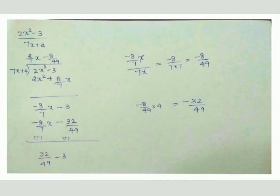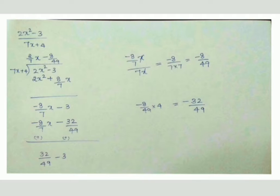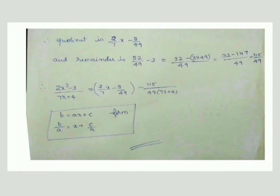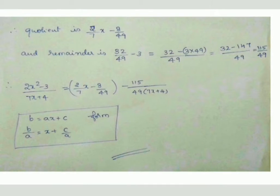To find the next term of the quotient, divide -(8/7)x by 7x. The x's cancel, leaving -8/49. So the second term of the quotient is -8/49. Multiplying -8/49 by (7x + 4) gives -(8/7)x - 32/49. Subtracting, we are left with -32/49 - 3. Therefore the quotient is (2/7)x - 8/49 and the remainder is -32/49 - 3.